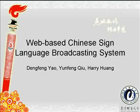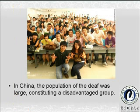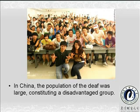Deaf web users can access information and collaborative web services on any computer connected with the Internet. In China, the population of the deaf is large, constituting a disadvantaged group. Illiteracy rates among the deaf still make up a considerable proportion in China. Their first language is CSL, and they cannot read web pages naturally and easily.